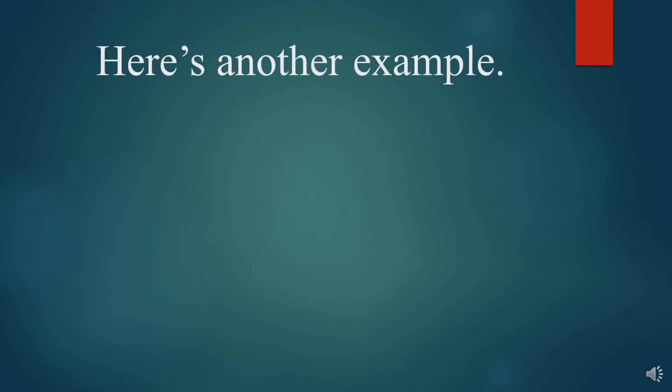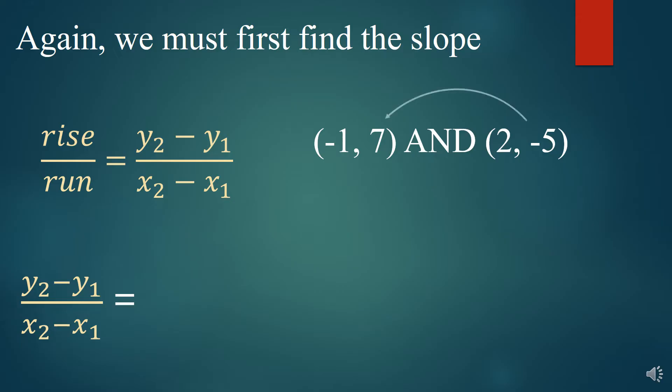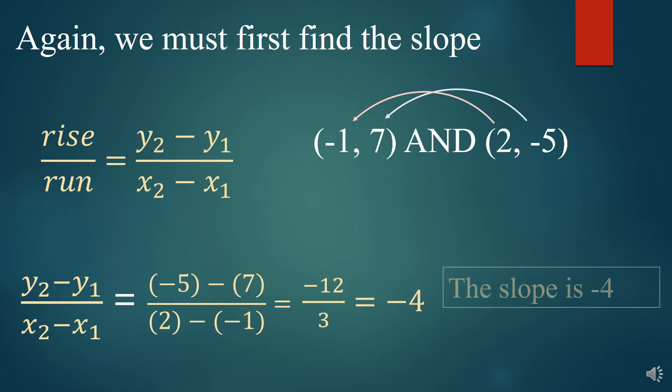Well, let's try another example. Suppose you have negative 1 and 7 and 2 and negative 5. Again, first you have to find the slope, so we're going to do that really quick. So we take our y's and we subtract them, y2 minus y1, and then x2 minus x1, and so that's what we get down below, and we simplify that. We get negative 12 over 3, which simplifies to negative 4. So we got our slope. It's negative 4.